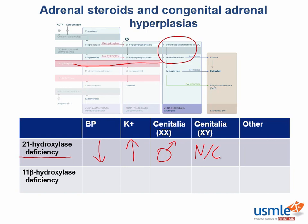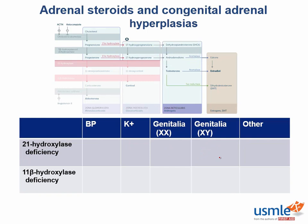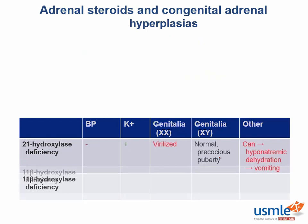Genital ambiguity in infancy may actually be a good thing — it at least warns you that there's a problem. With girls, you notice the abnormal genitals and usually the problem gets taken care of. What sometimes happens with boys is that they get sent home because everything looks okay on the outside. Meanwhile, their aldosterone deficiency causes them to dehydrate like crazy, and the next time they're brought in, it's to the ICU — because babies can't tell you they're thirsty. The only clinical sign that's routinely present is severe vomiting.